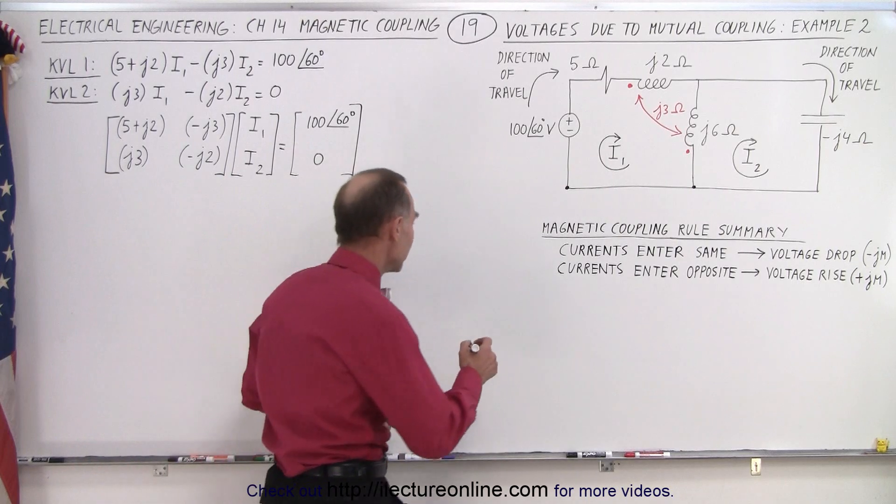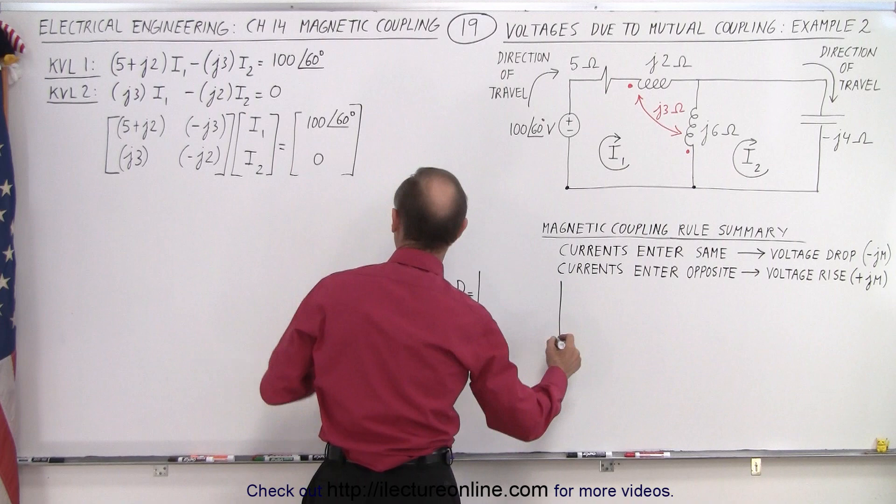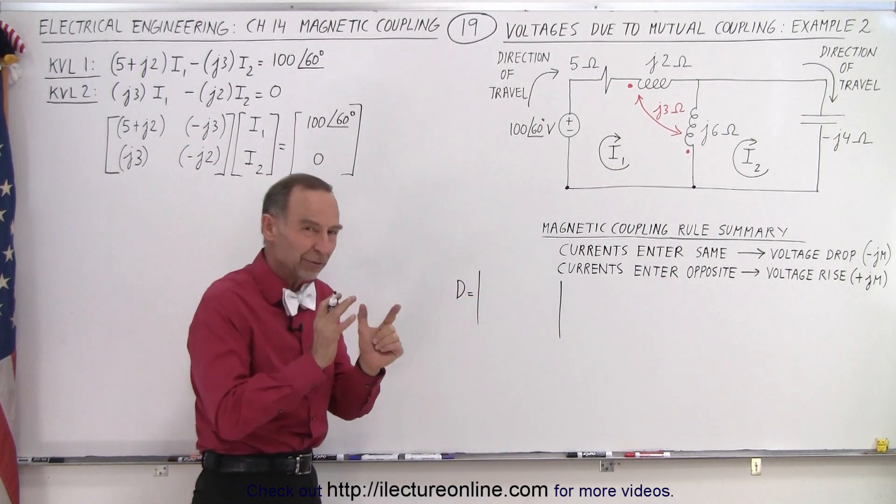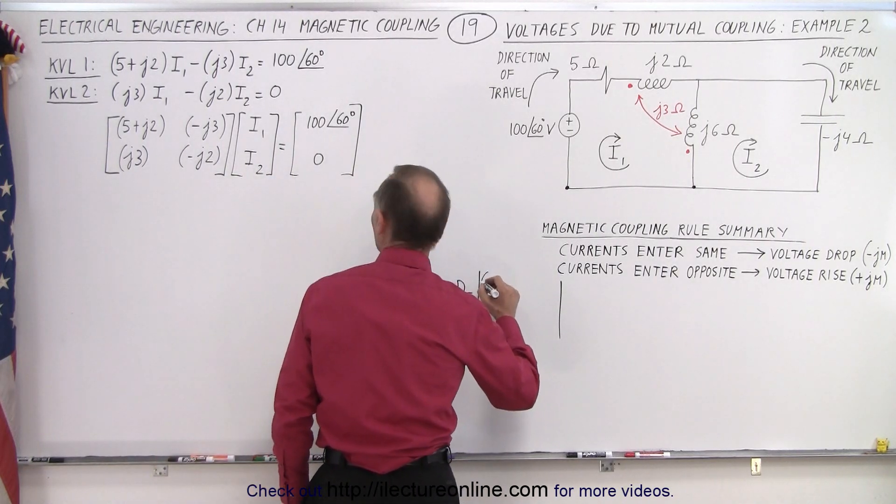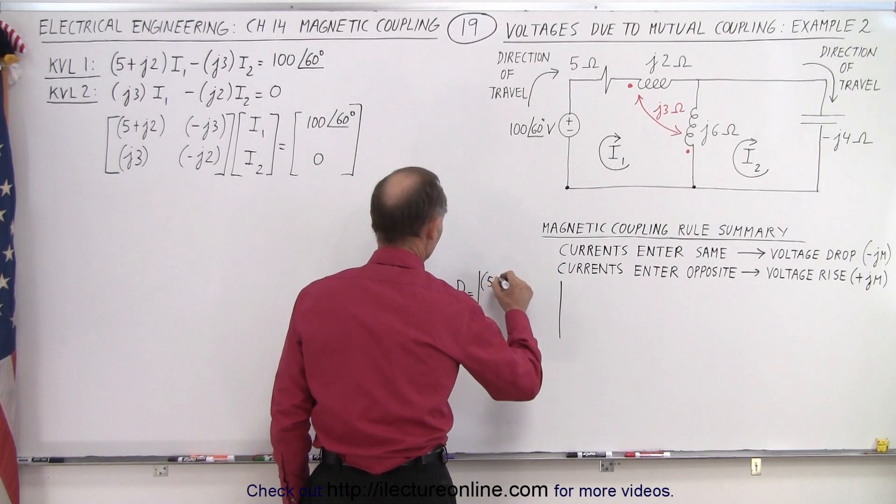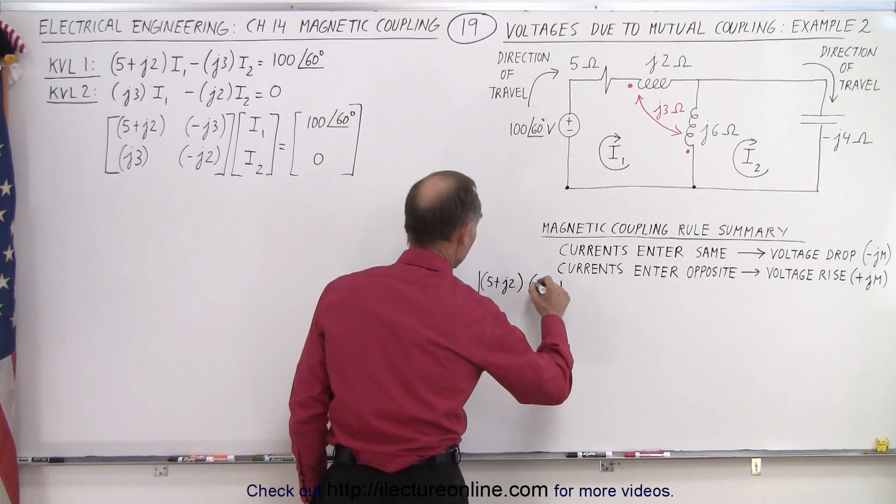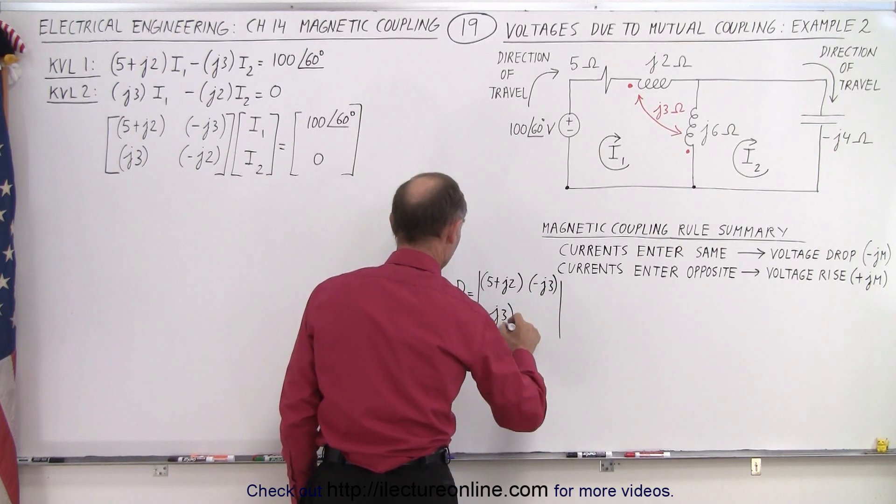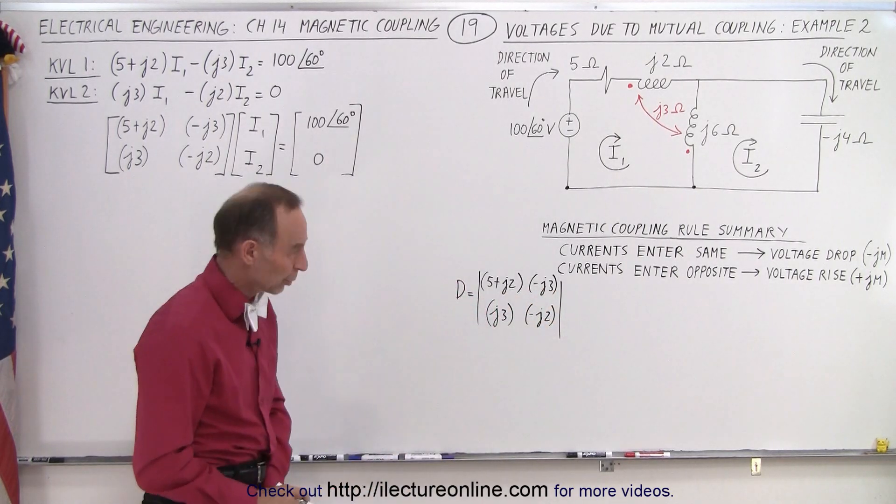So first we need to find the D determinant. D is equal to, and we go ahead and just copy what's in here. Notice I use parentheses to make sure we have the elements clearly defined. So here we have the 5 plus J2, here we have minus J3, over here plus J3, and minus J2. It just makes it a little bit cleaner to work with.